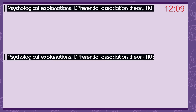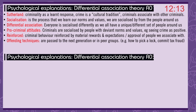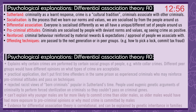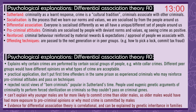Psychological explanations — differential association theory. Sutherland suggests that criminality is a learnt response. Crime is a cultural tradition and criminals associate with other criminals. Socialisation is the process by which we learn our norms and values from the people around us. Differential association means everyone is socialised differently, as we all have unique sets of people around us. Criminals are socialised by people with deviant norms and values — for example, seeing crime as positive. Criminal behaviour is reinforced by material rewards and the expectations and approval of those we associate with. Offending techniques are passed to the next generation or across peer groups — for example, how to pick a lock or commit tax fraud. This theory explains why certain crimes are performed by certain social groups, for example white-collar crimes.